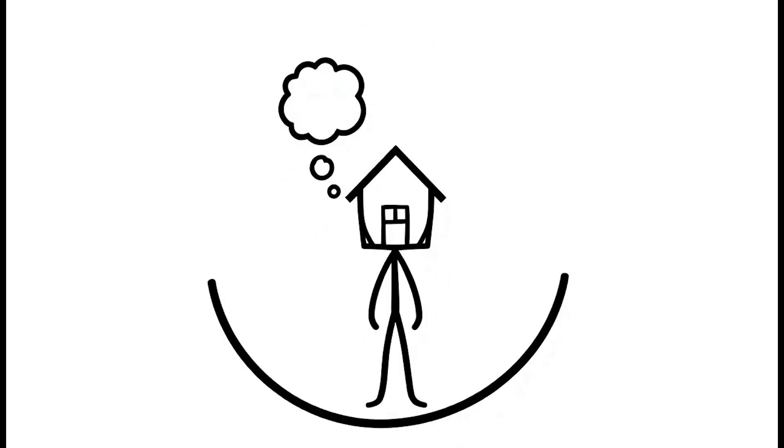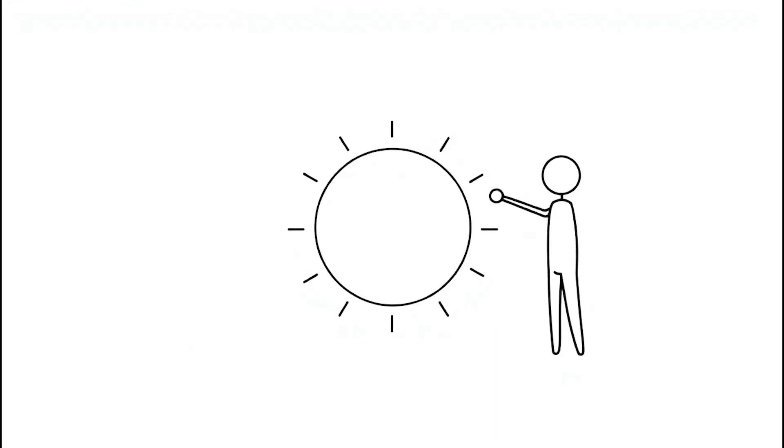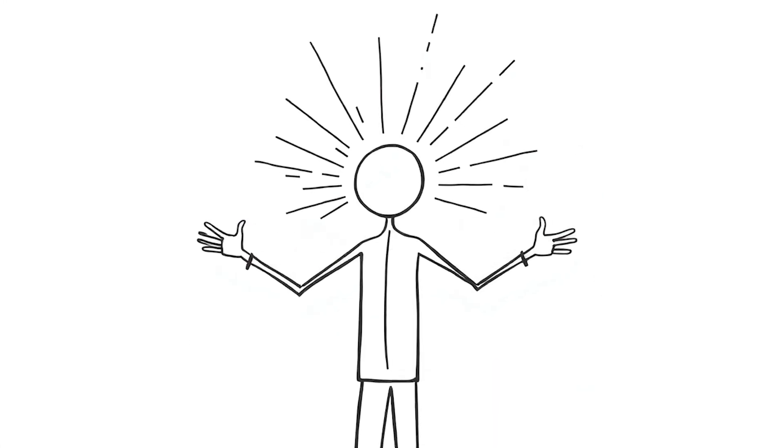Ever looked at a donut and thought about living on one? Well, if Earth was shaped like a donut, life would be pretty wild. The middle hole would create some crazy events that would blow your mind.